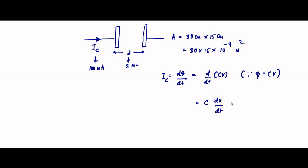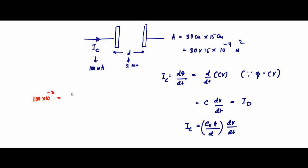This expression C × dV/dt is also one of the three expressions for displacement current. We can write C as ε₀A/d, so the equation becomes (ε₀A/d) × dV/dt = Ic, the charging or conduction current. We have all the values: the charging current Ic = 100 milliampere = 100 × 10⁻³ A, and C = ε₀A/d.